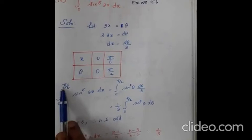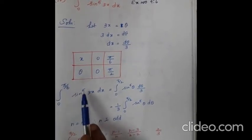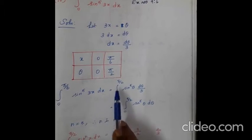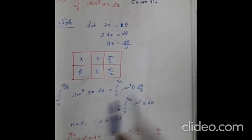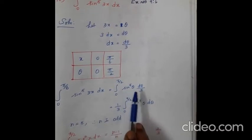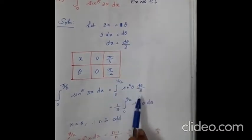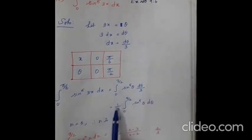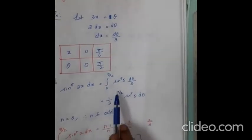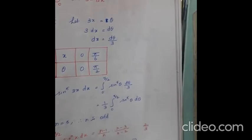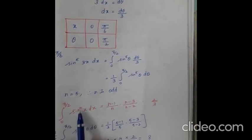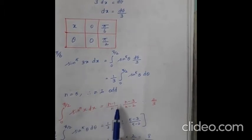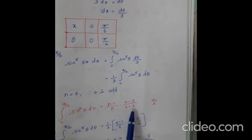Now I rewrite the question: the integral from 0 to π/6 of sin⁵(3x) dx equals the integral from 0 to π/2 of sin⁵(θ) · dθ/3 (since 3x = θ, and dx = dθ/3). Taking 1/3 as common, this becomes 1/3 × integral from 0 to π/2 of sin⁵(θ) dθ. Now n = 5, and n is odd, so we apply the reduction formula.